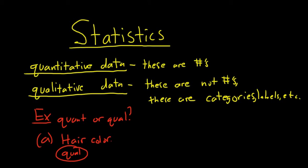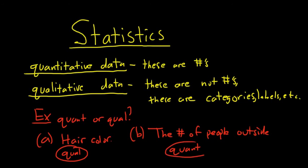B. How about the number of people outside. That is a number, right? You can count the number of people outside. So that is quantitative. So pretty easy.